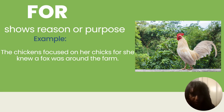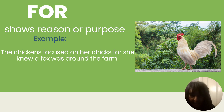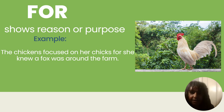So let's start with FOR. FOR means to show reason or purpose. The example I have is: the chicken focused on her chicks, for she knew a fox was around the farm. So what is the conjunction in that sentence? The word FOR. It is connecting the idea that she's focused on her chicks, and also connecting the other thought — she knew a fox was on the farm. Both of those could be two separate sentences, but when you add the word FOR, it connects those two together.